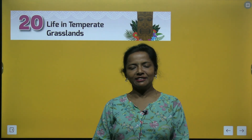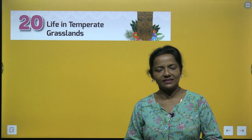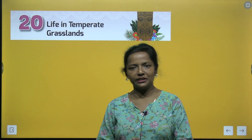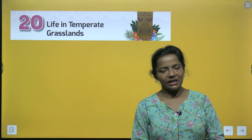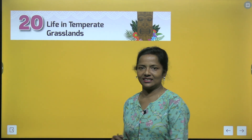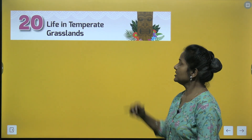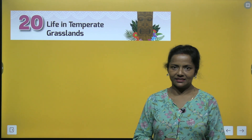Hello wonderful learners, are you all ready to start a new chapter of class 7 geography with your social science teacher Aparajita? Okay children, so here we start with chapter number 20: life in temperate grassland.